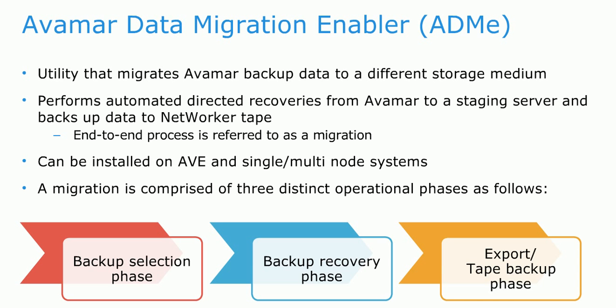The backup selection phase provides filters that allow the user to select specific Avamar backups to migrate. Backups can be selected based on a backup tag, date range, or related dates such as one month back or one day back. It can also be based on the backup type, such as an on-demand or client-initiated backup. Once the backup is selected, it gets recovered onto the staging server and then exported to tape.